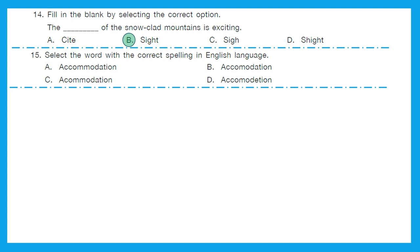Question 15: Select the word with the correct spelling in English language. It looks like they are talking about accommodation. The right spelling of accommodation is option A: A-C-C-O-M-M-O-D-A-T-I-O-N.